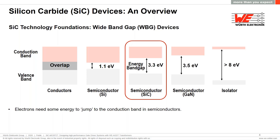For conductors like copper or gold, the valence and conduction bands overlap and there are plenty of free electrons to conduct at room temperature. At the other extreme, insulating materials like glass feature very high band gap energy, making it very difficult for electrons to jump to the conduction band. In between, we find semiconductor materials with a moderate band gap energy level. For silicon, this is around 1.1 eV. For silicon carbide, the band gap energy is around 3.3 eV, and for GaN 3.5 eV — both around three times wider than silicon, hence called wide bandgap materials.